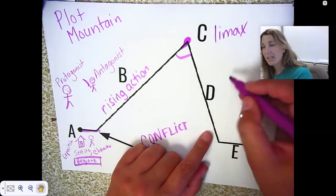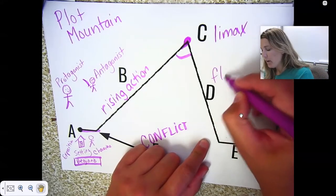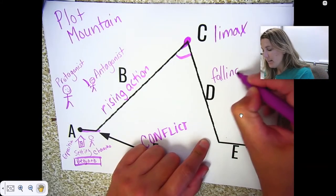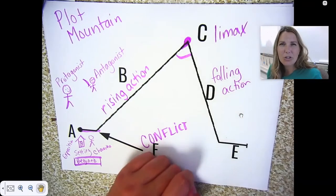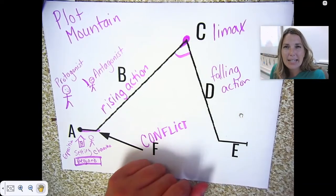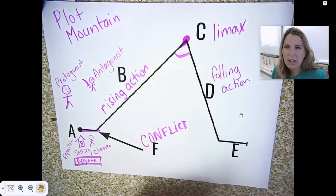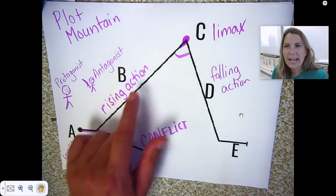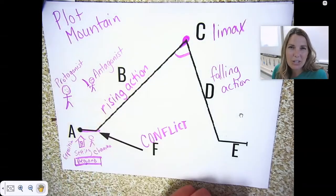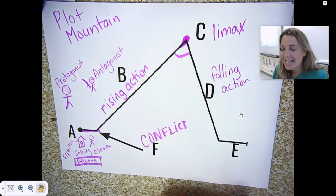After the climax, you have the falling action. This is where some things start getting tied up — the loose ends. All the rising action events start wrapping up and you get the feel for how the story ends.